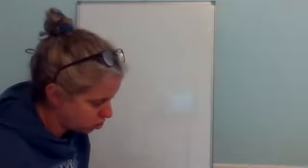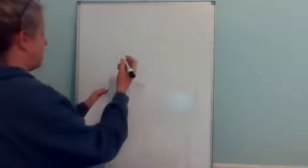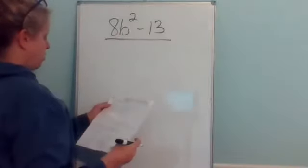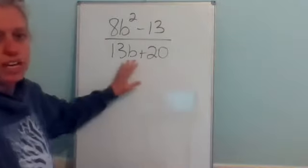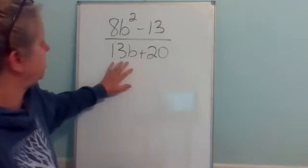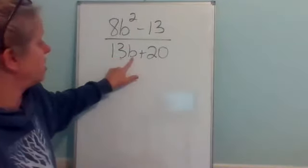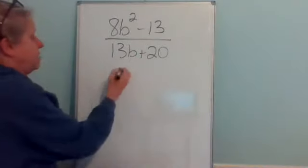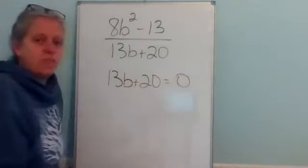The first two problems say: find the number or numbers for which the rational expression is not defined. On number one, you've got 8b squared minus 13 over 13b plus 20. What we need to do to find what makes these undefined is you don't care about the numerator. Since there is a variable in the denominator, there is going to be a number that will make this undefined. So you just set whatever the denominator is equal to zero and solve it.